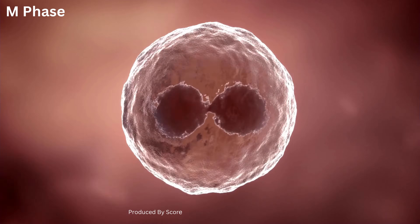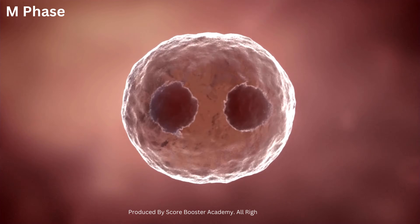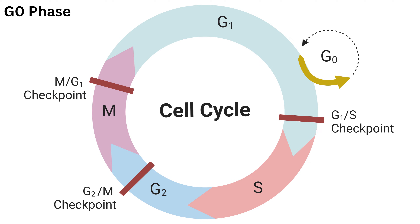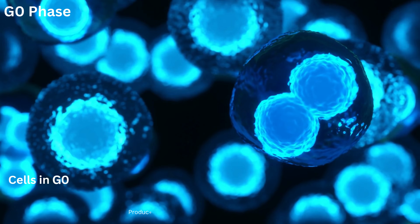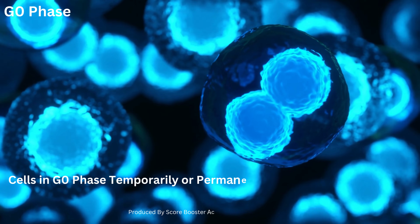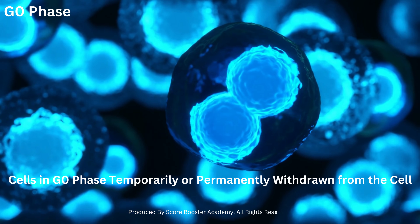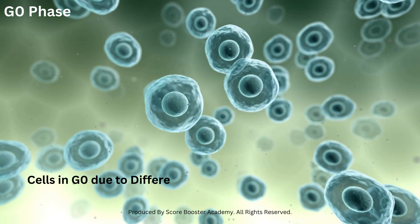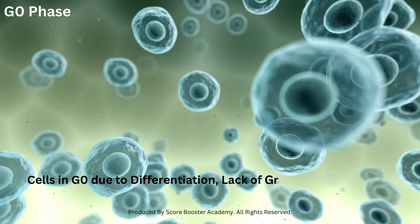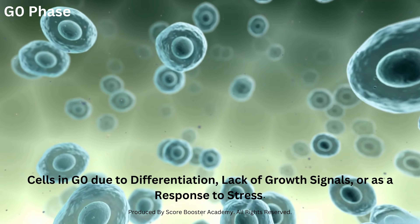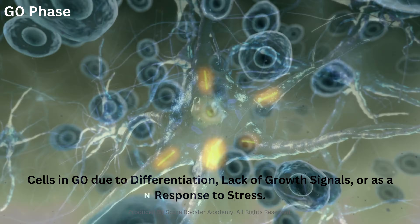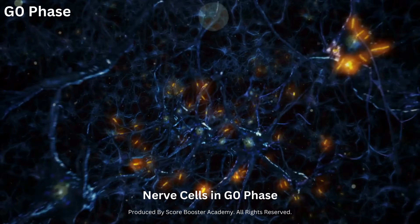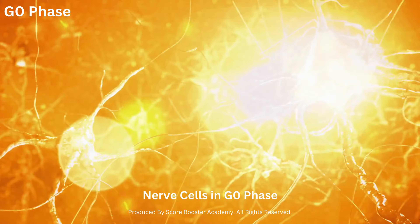In addition to the main phases of the cell cycle, there is a non-dividing state called the G0 phase. Cells in the G0 phase are temporarily or permanently withdrawn from the cell cycle. They may enter G0 due to differentiation, lack of growth signals, or as a response to stress. Some cells, like nerve cells, remain in G0 indefinitely, while others can re-enter the cell cycle when necessary.